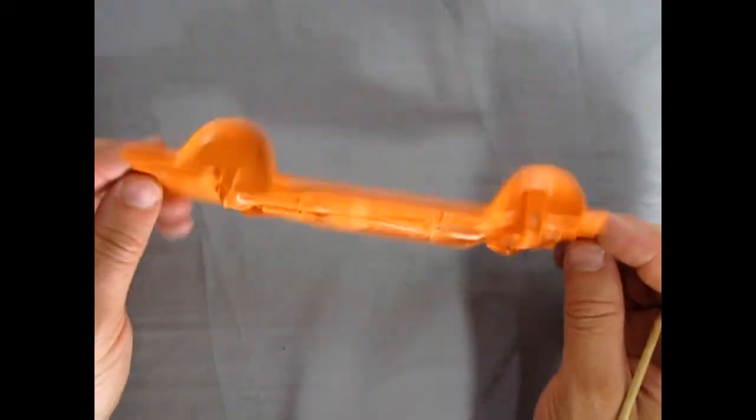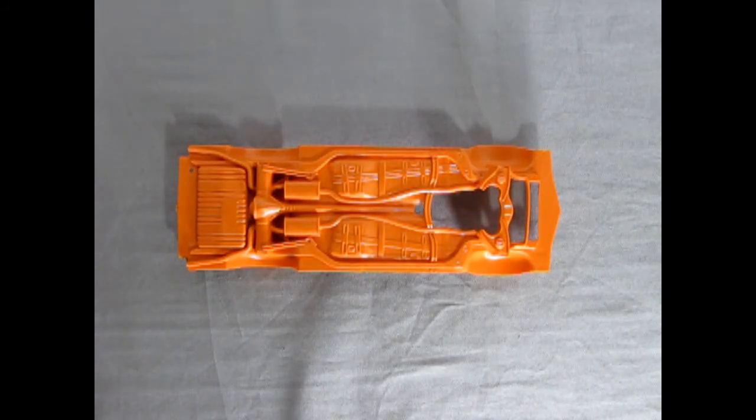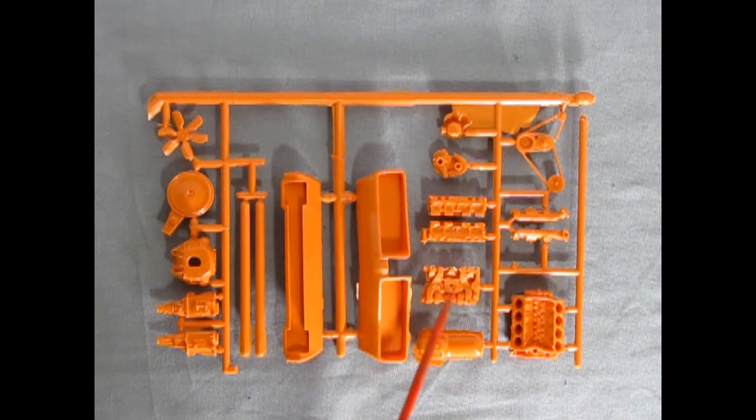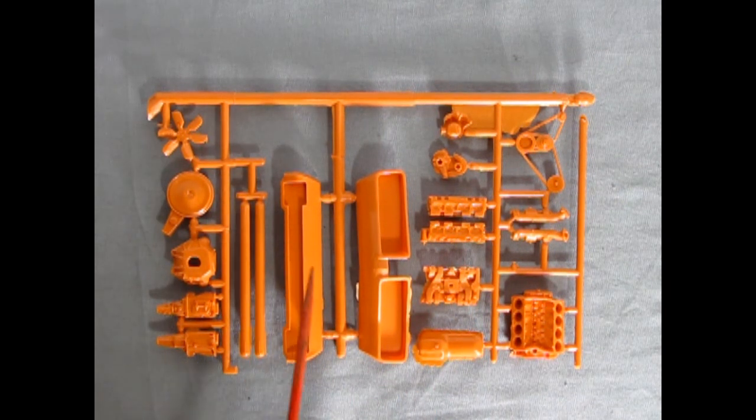The main meat and potatoes of the kit is that amazing engine block. So let's take a look at the other plastic components. There's two orange parts trees in this kit. What I wanted to show first was the one with the engine block, and then we can take a look at the other components in a minute.